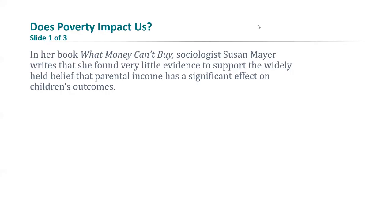Sociologist Susan Mayer wrote a book called What Money Can't Buy, originally published in 1997. Her perspective examined how parental income impacts children's outcomes, and she found very little evidence to support the widely held belief that parental income has a significant effect on children's outcomes. So while many sociologists and programs have focused on children, Mayer argued that children don't necessarily know they are poor unless they enter the mainstream middle class.